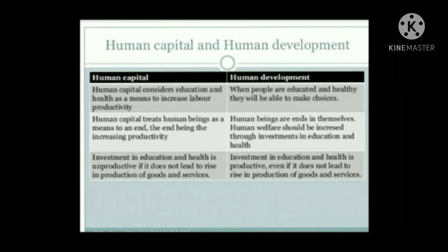The terms human capital and human development sound similar but there is a clear distinction. Human capital considers education and health as means to increase labor productivity. On the other hand, according to human development, education and health are integral to human beings — only when people have the ability to read and write and the ability to lead a long and healthy life are they fully developed. Human capital treats human beings as means to increase productivity, so any investment in education and health is considered unproductive if it does not enhance output. However, according to human development, human beings are ends in themselves, so human welfare should be increased through investment in education and health even if such investment does not result in higher labor productivity. Every individual has a right to basic education and basic healthcare regardless of their contribution to labor productivity.